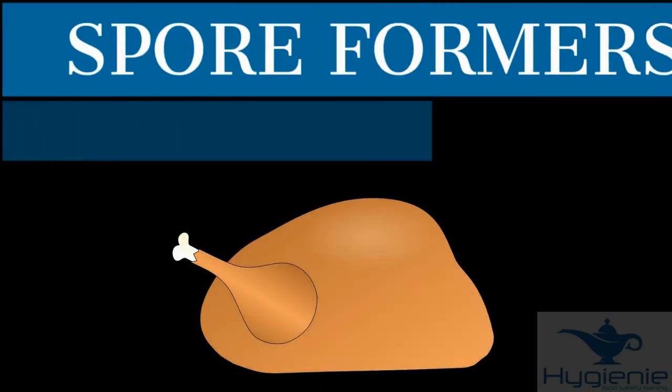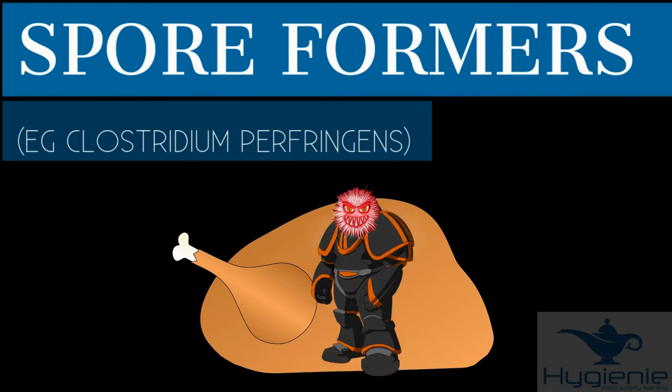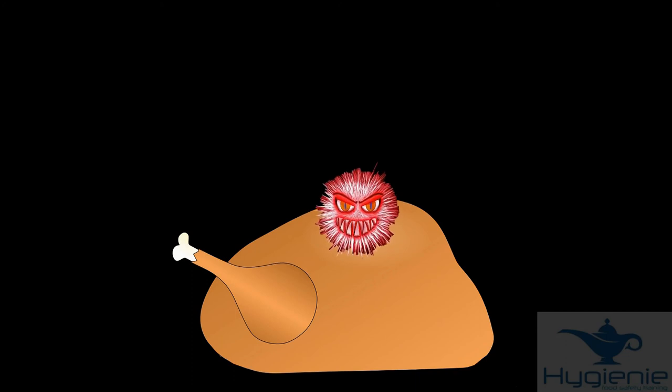However, some bacteria can form spores. It puts on a protective suit to protect itself during adverse conditions such as high temperatures or lack of moisture. When the conditions return to normal the bacteria removes its suit and starts to multiply again.